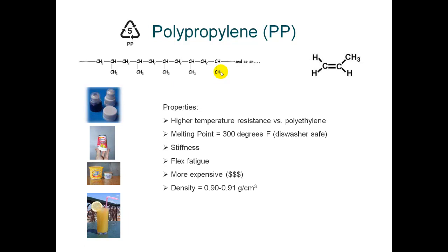Polypropylene has higher temperature resistance — 300 degrees Fahrenheit versus 220 and 250 for low density and high density polyethylene. This means that containers made of polypropylene are generally dishwasher safe; they won't melt or soften in the dishwasher or typically in the microwave either. Unlike polyethylene containers like common Glad brand containers, which can soften and warp due to the high temperatures inside the dishwasher. Plastic cooking utensils are also made from polypropylene because of its high temperature resistance.